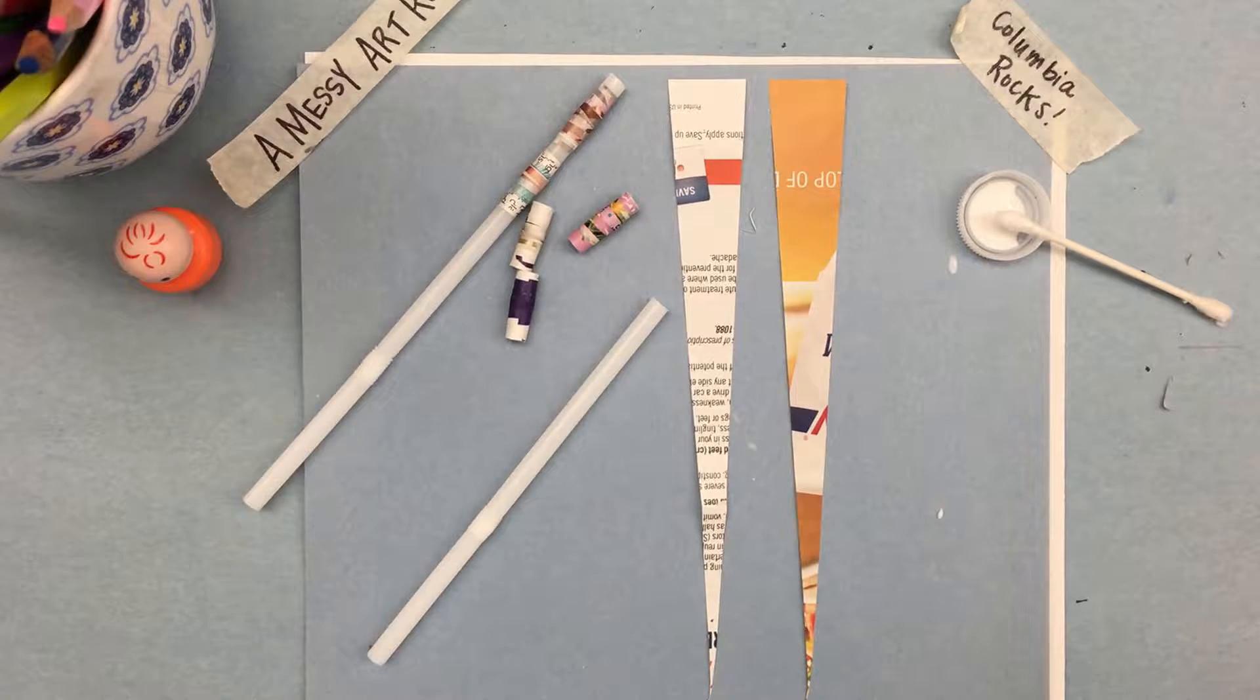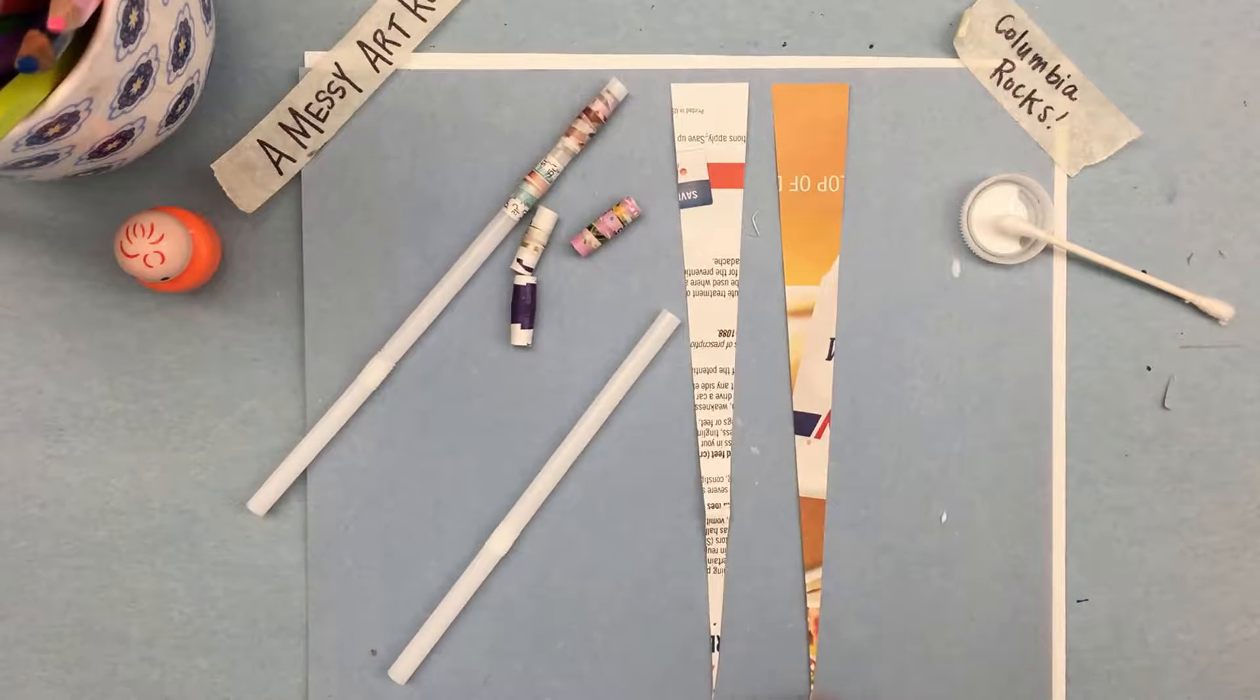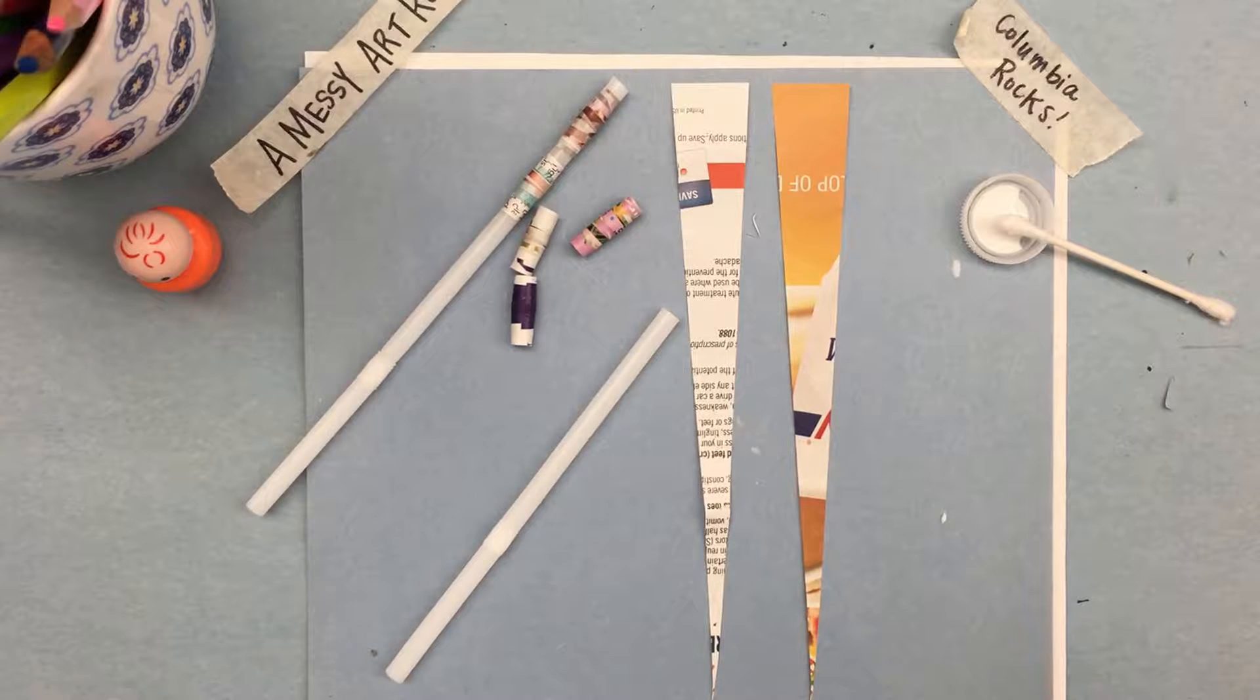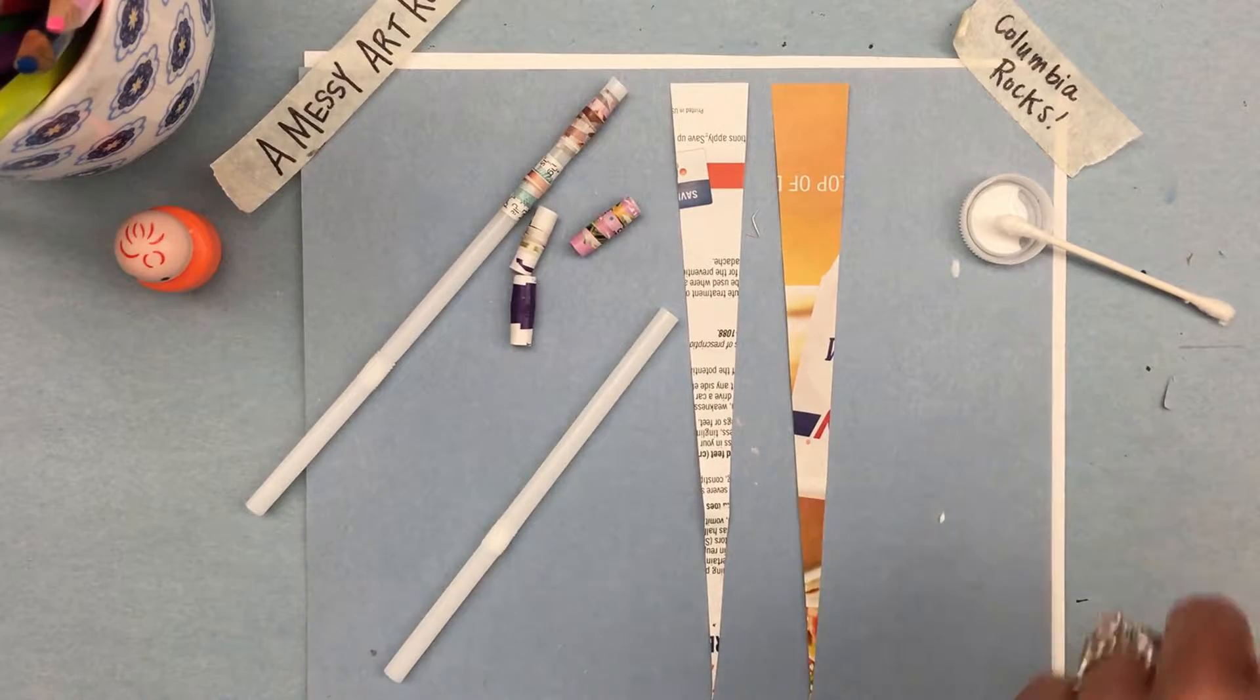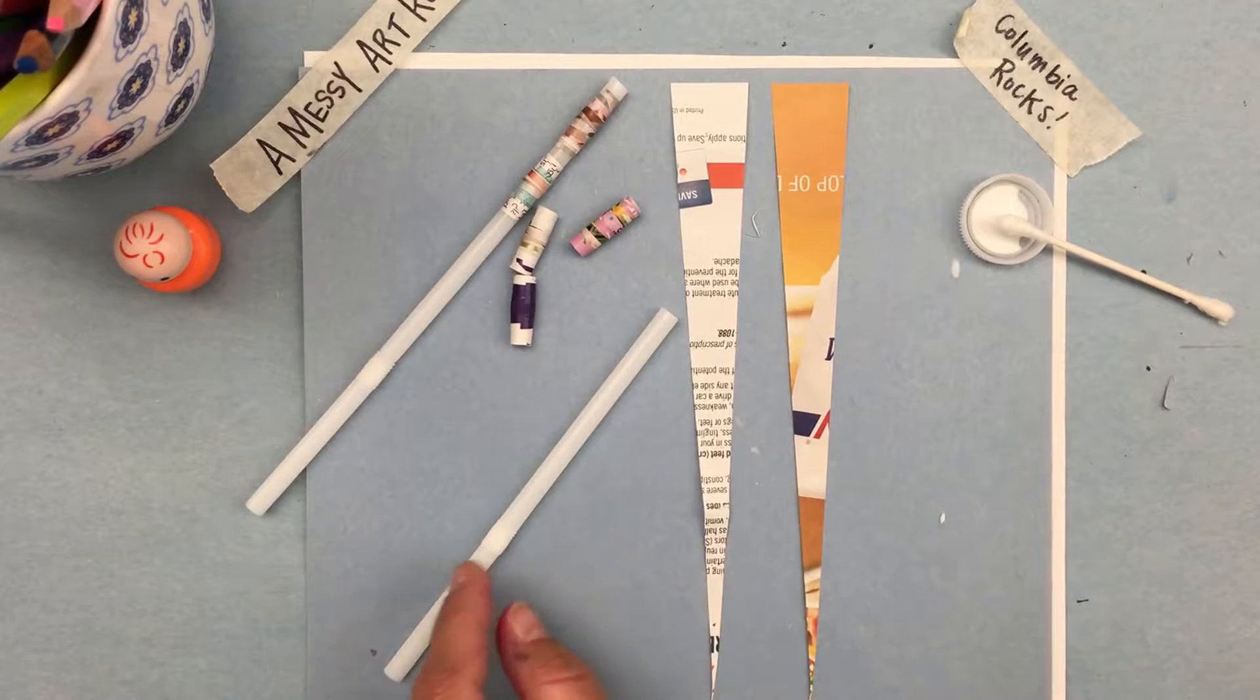So the first step is to cut your magazine pages into long triangular strips. It's easiest if you draw it with a ruler and then cut it out. But once you have these long triangular strips you're ready to go. All you're going to need is Elmer's glue or any white glue and a straw.